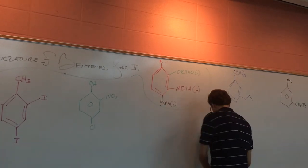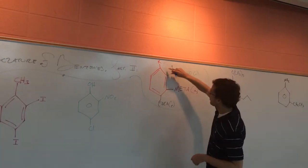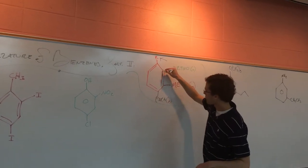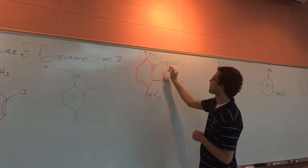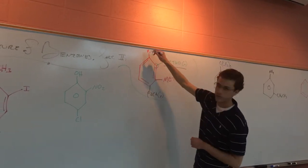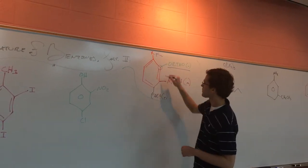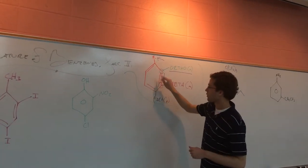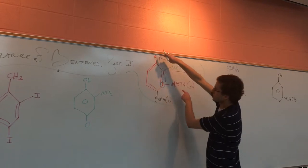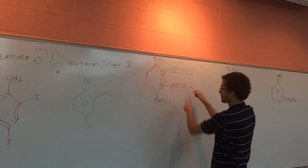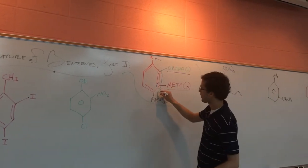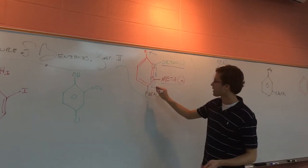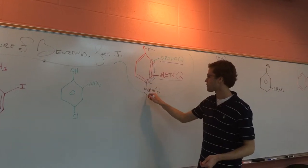if we have an R group right up here, and then we have something that's one carbon away from that R group, then we can just call that — whatever that group is — ortho to the R group. If we have something that's two carbons away from it, then we can call that group meta. And if we have one that's three carbons down or on the exact opposite side of the benzene ring, then that can just be called para.